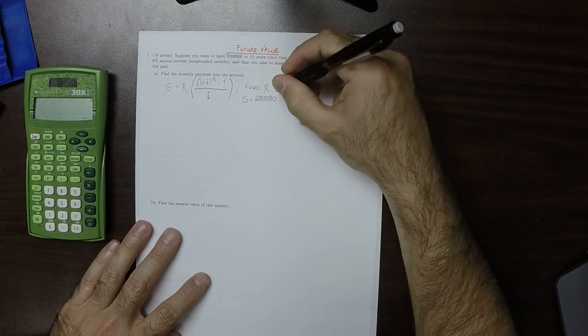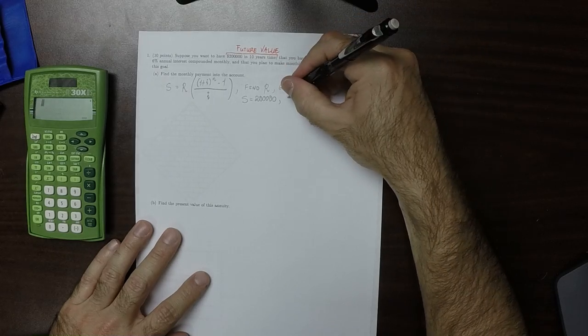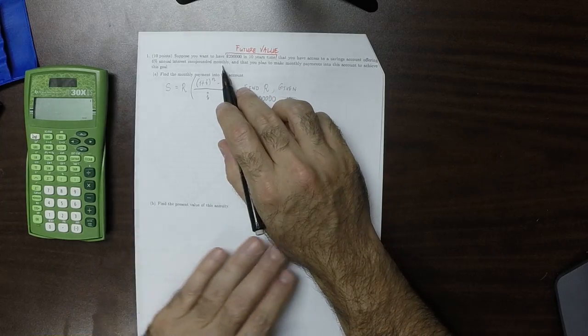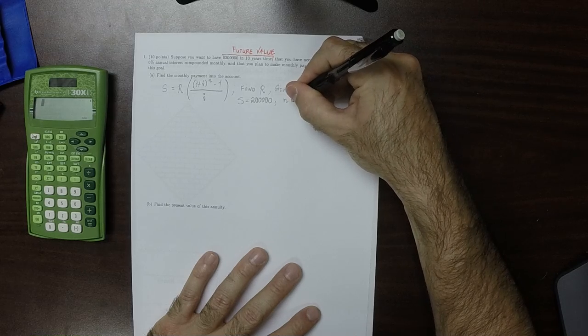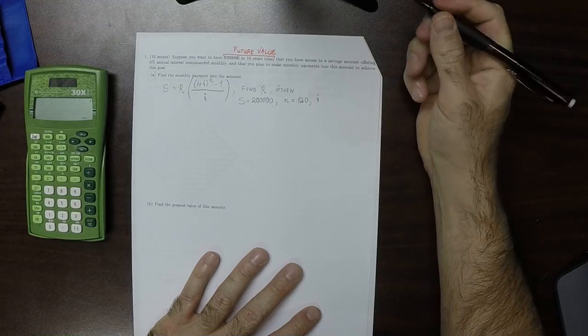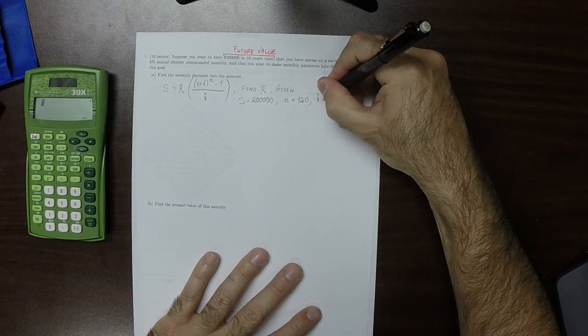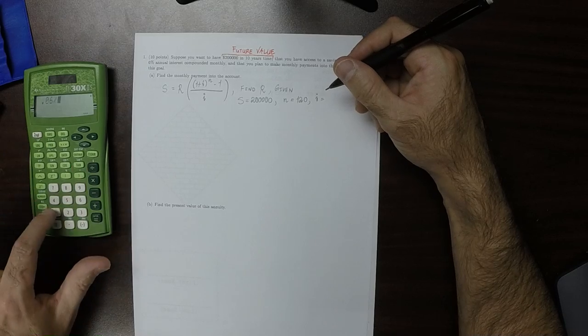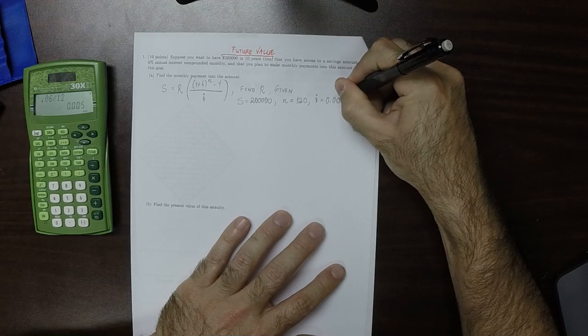And we are given that S is 200,000, our future value. So we have 10 years, but this is compounded monthly, which means that there's 12 events per year. So n is 120, and i is 6% annual interest, but it's compounded monthly. So that's 0.06 over 12. So that's 0.005.